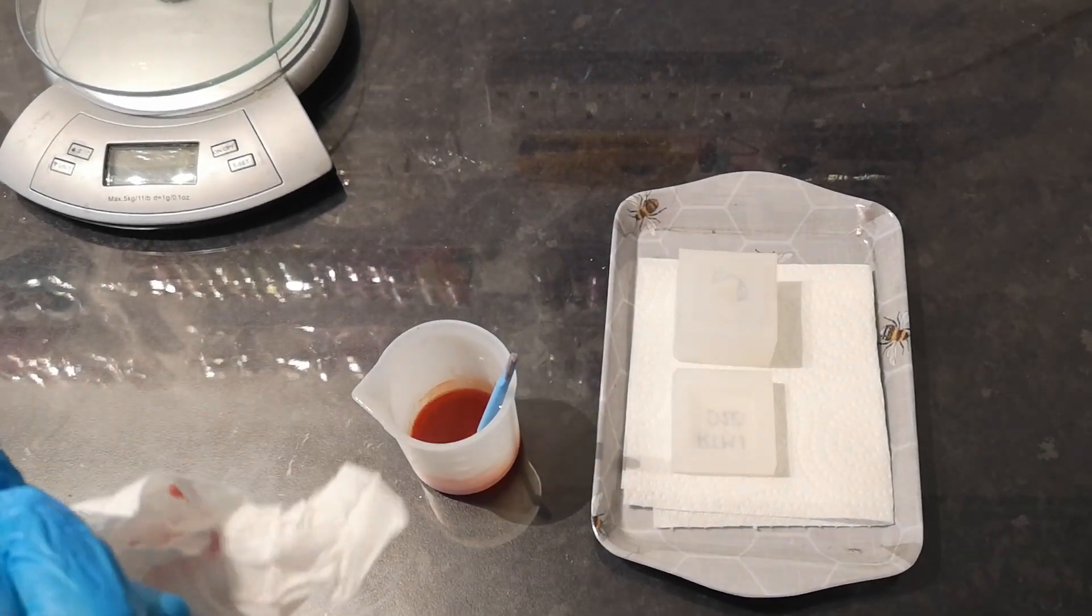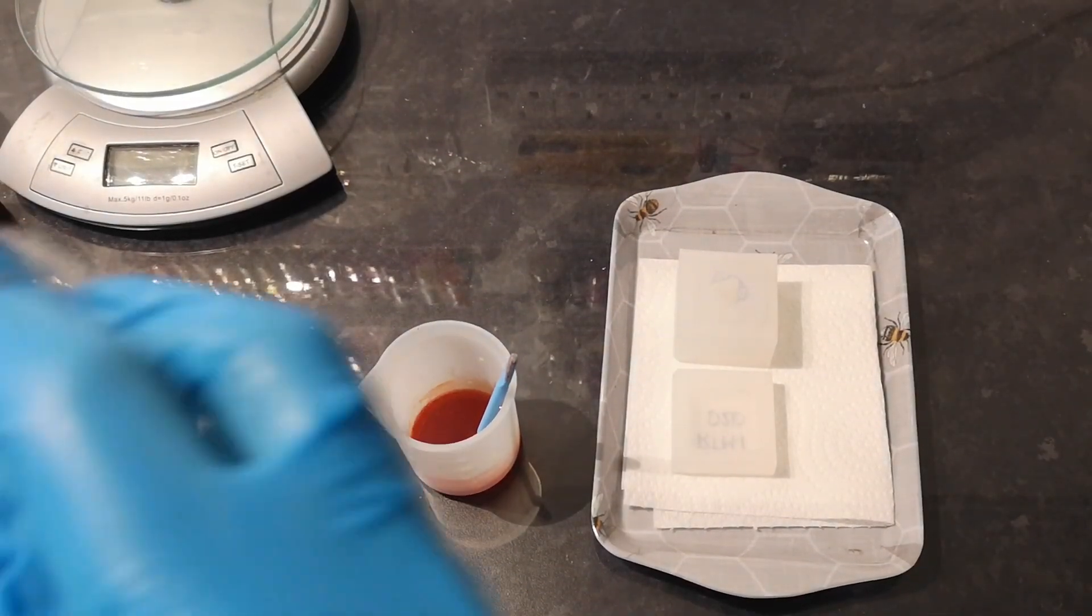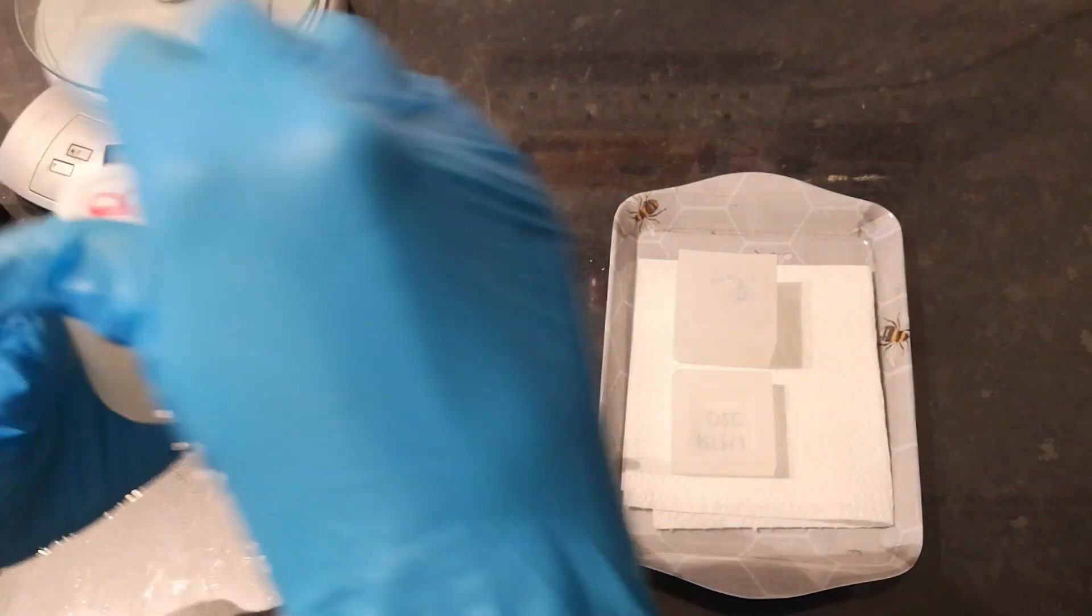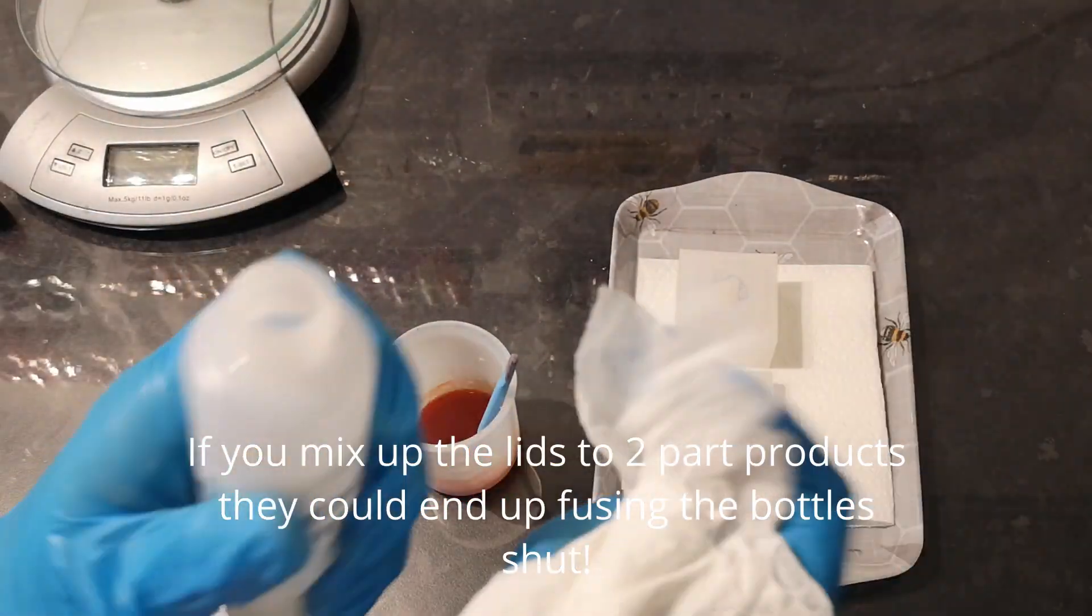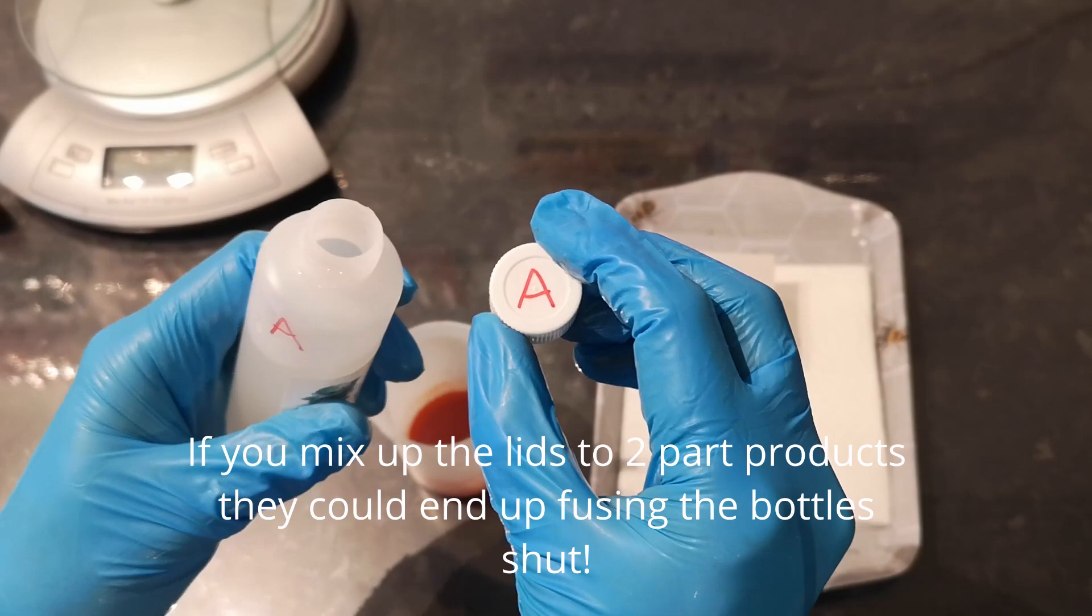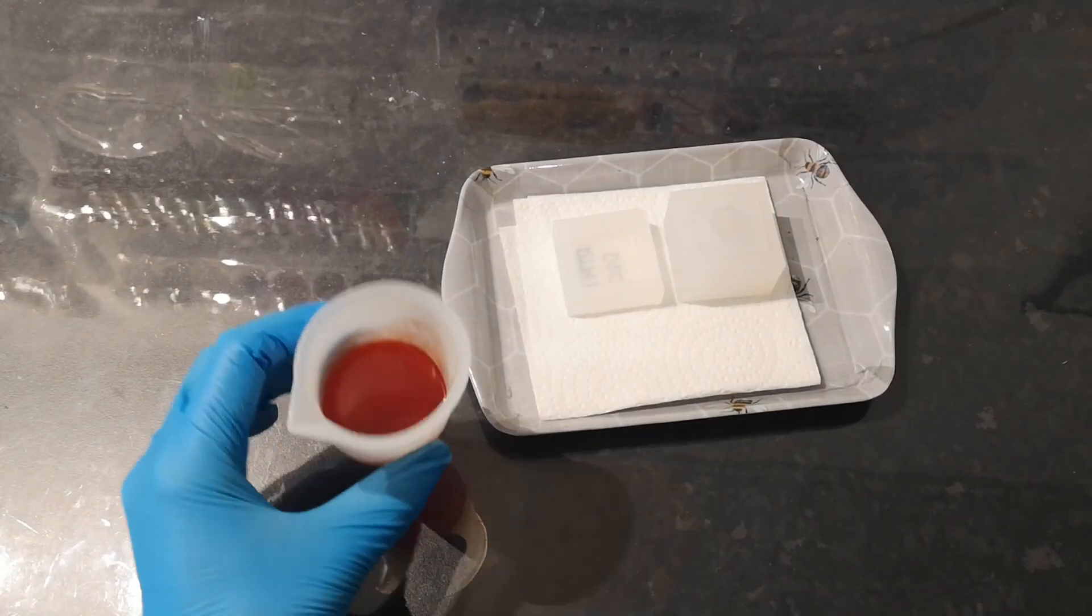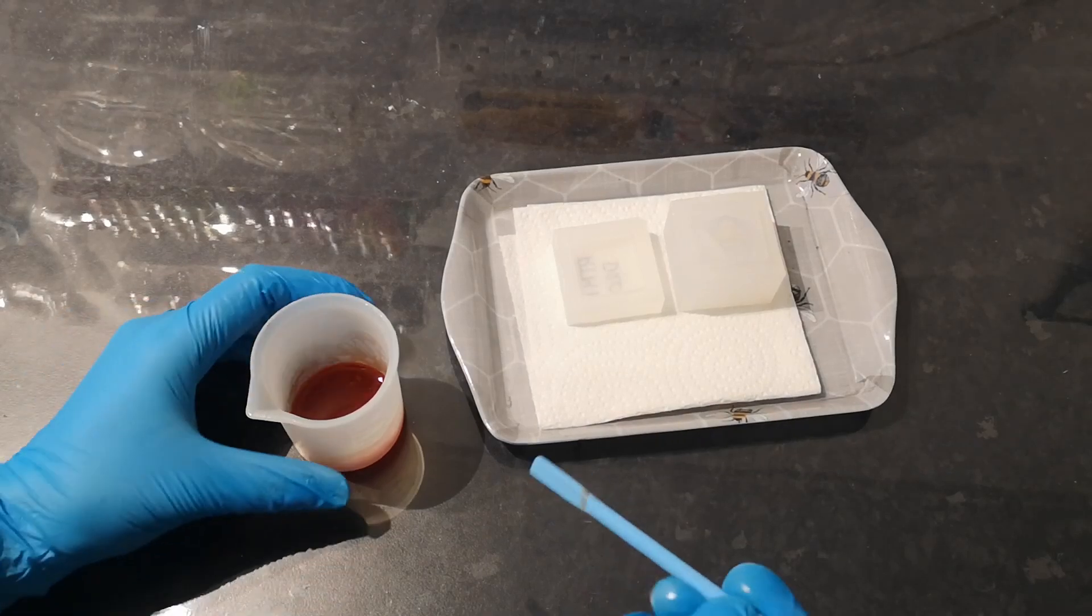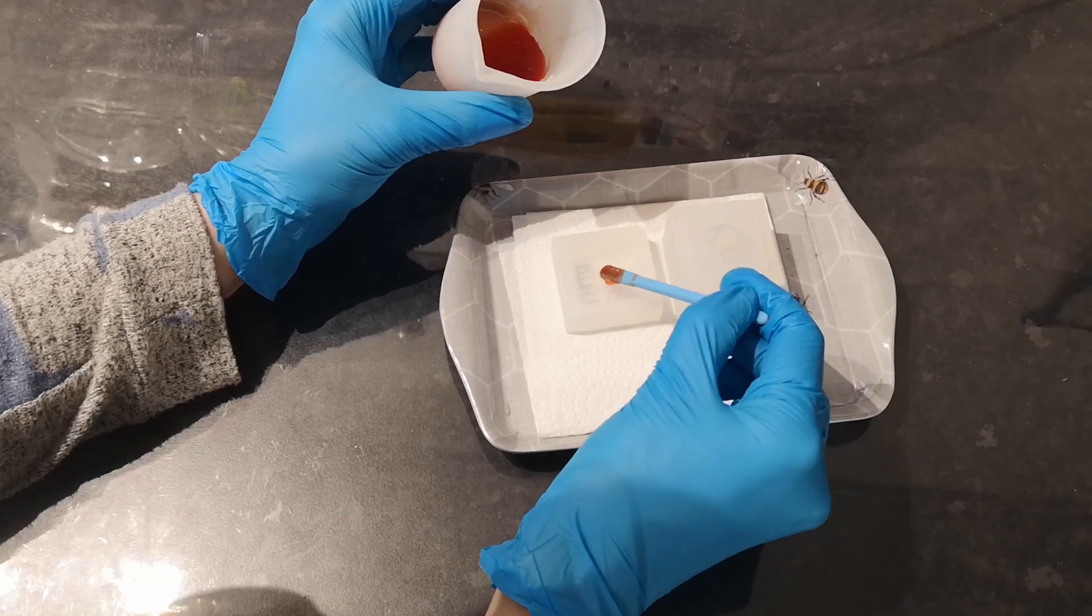While we're waiting, put the lids back on everything, making sure that you put B's lid back on B. I labelled them so that I know. So what I've done is I've just left the resin to settle for 10 to 15 minutes and that's just allowing any bubbles, any air that's been trapped in there whilst they've been stirring to rise up to the surface and burst.